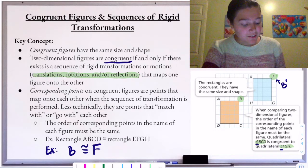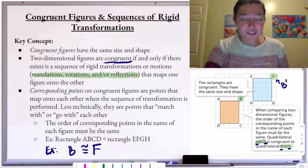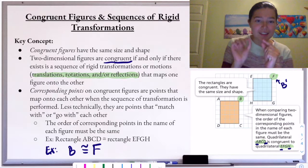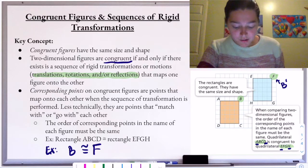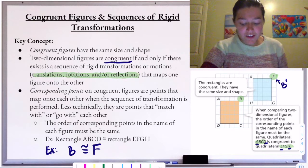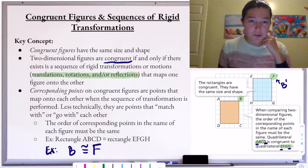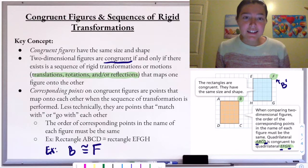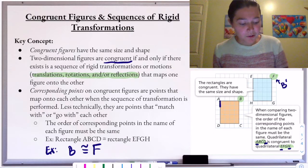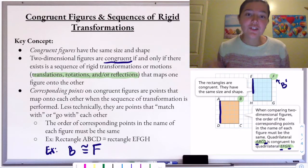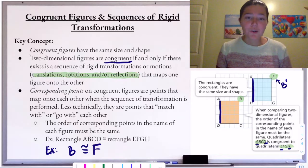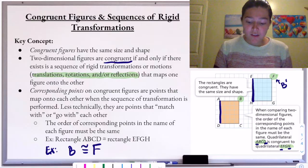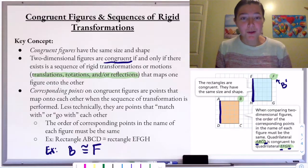The order of corresponding points in the name of each figure must be the same. They're calling these quadrilaterals ABCD and EFGH, so A and E are corresponding points, and D and H correspond with each other. We can also say that figures, side lengths, and angles correspond. For example, side AD corresponds with segment EH, and there are also corresponding angles, which will be important in geometry.